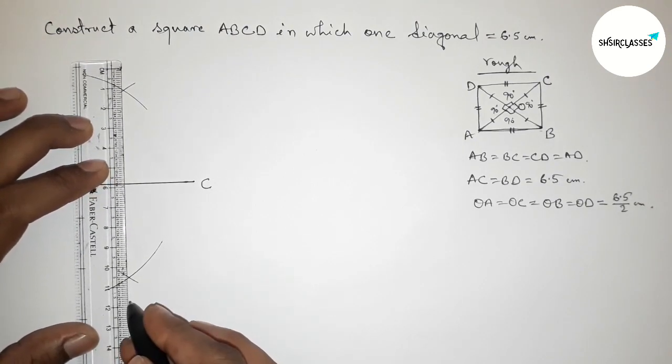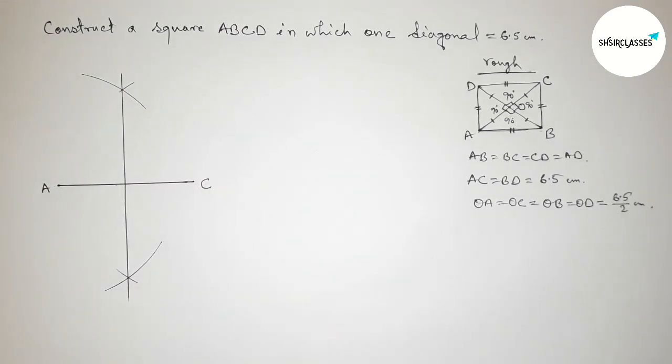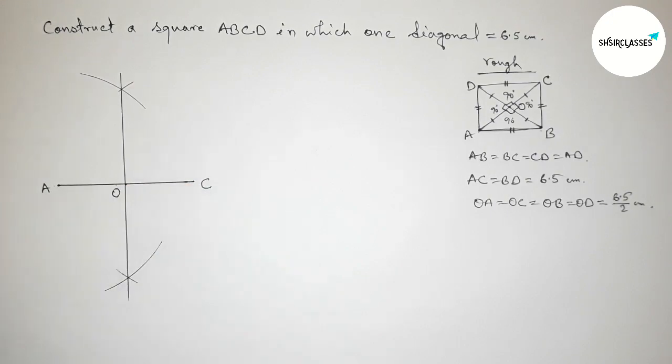So now first joining this line. Joining this line, now the both the lines intersect here at the point, so taking point here O.